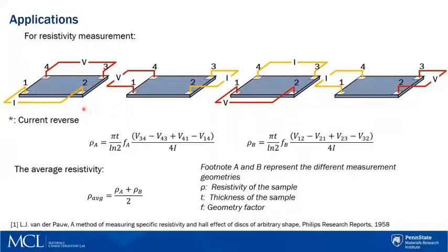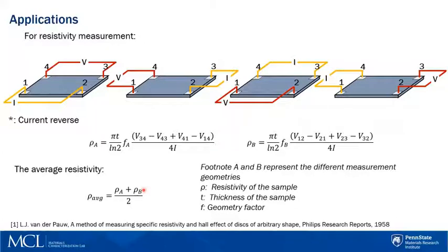Then reverse the current direction and measure again. Repeating this measurement process for all the rims of the square sample, we can subsequently get the resistivity under different measurement geometries using the equations listed here, and then take the average value as the final answer. Besides resistivity, users can also use this method to get sheet resistance and conductivity.